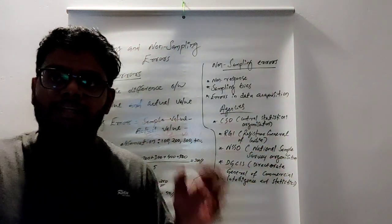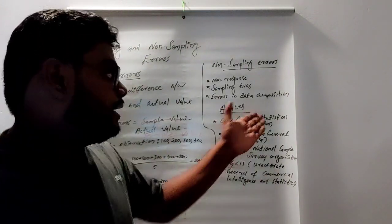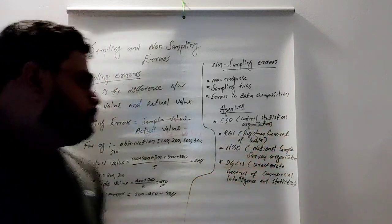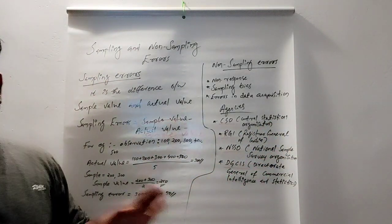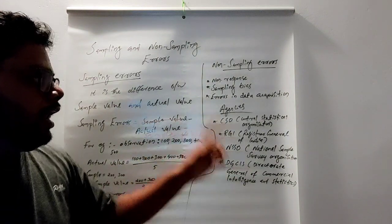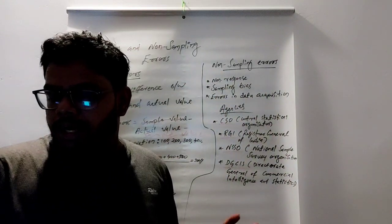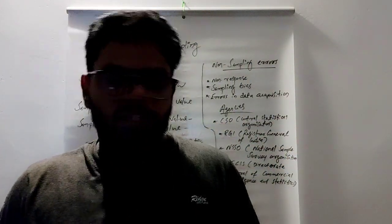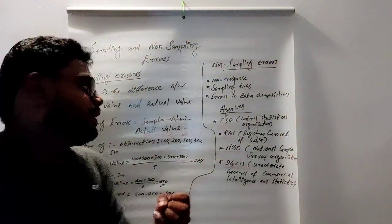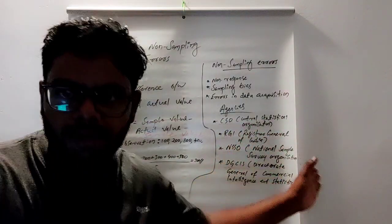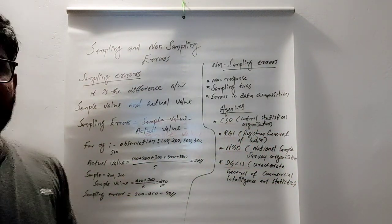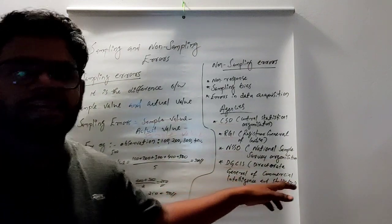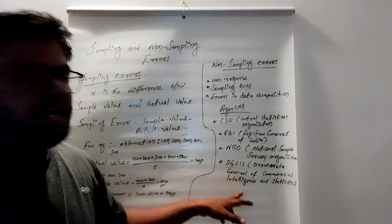The third agency is NSSO — National Sample Survey Organization — which conducts surveys related to poverty and unemployment. The fourth agency is DGCIS — Directorate General of Commercial Intelligence and Statistics — which conducts surveys related to commerce and industry.